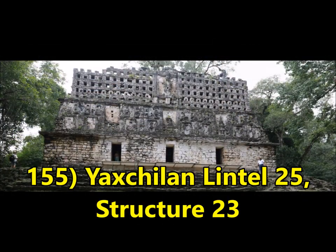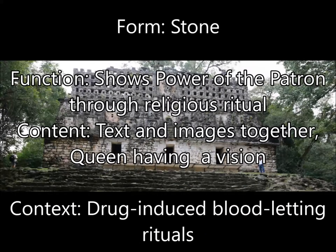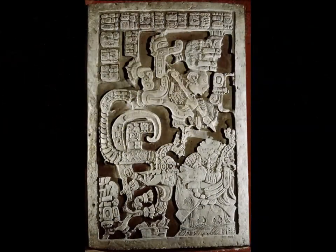Here you have Yaxchilán. You need to know Lintel 25 and Structure 23. For form, you have stone. For function, these buildings show the power of the patron. While the buildings are important, the lintels are more important than the actual structures, and they show power through religious ritual — that is their function. For content, what the picture actually contains is text and images together.